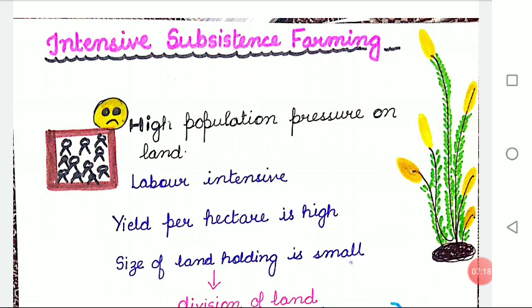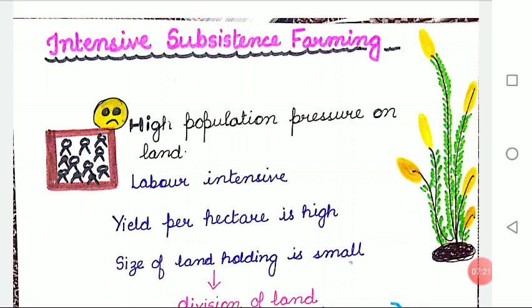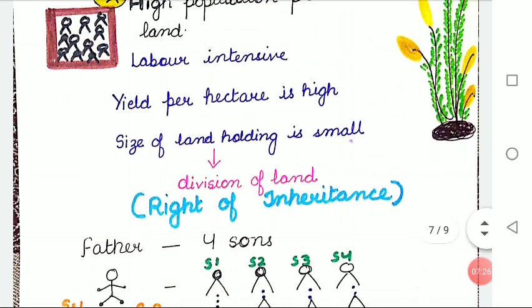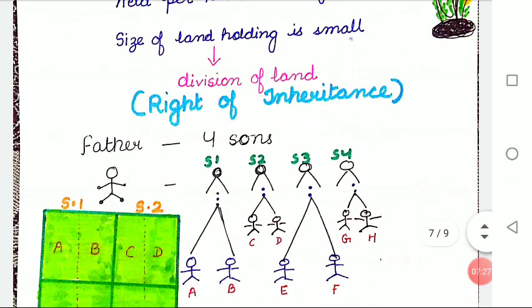The size of land holdings is small and uneconomical. Farmers take maximum output from limited land by raising two to three crops in a year from the same land — that is, multiple cropping is practiced.